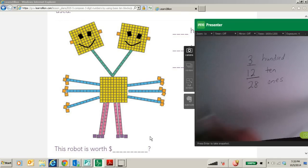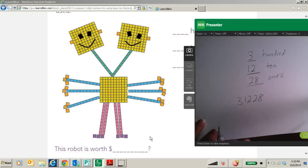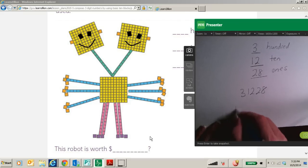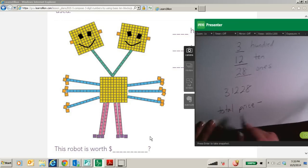Now, if I were to write this number, could I simply write we have 312, 28? Would that work? I don't think so. So we need to get the total price. And to do this, we are going to need to regroup.